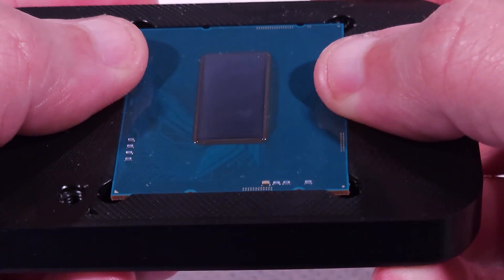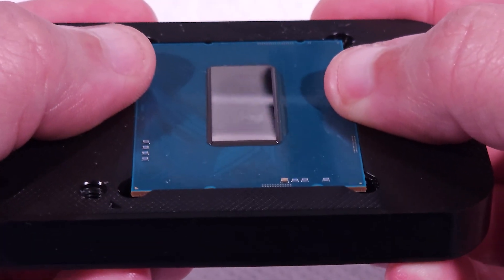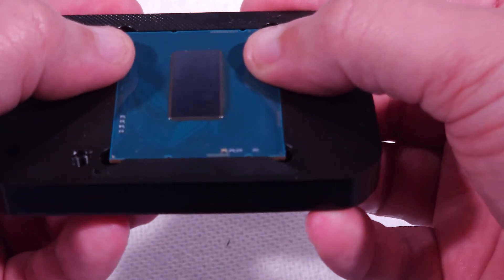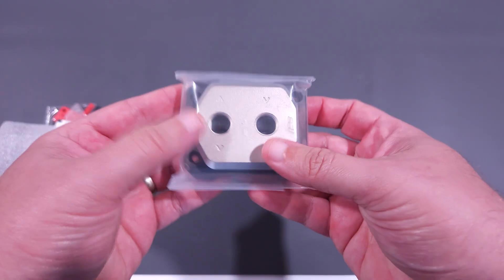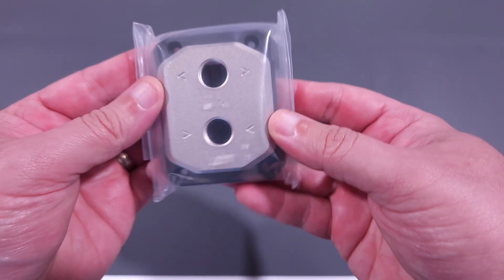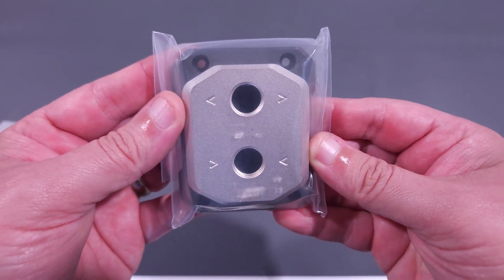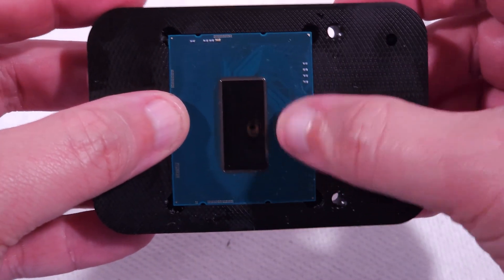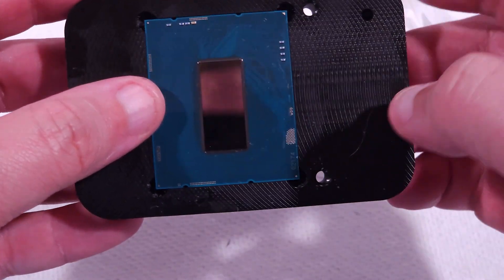That completes the process for delidding an Intel 14th generation CPU. From here, you can decide what kind of cooling solution to apply to maximize your system's cooling performance. I'd recommend at least checking out the Iceman Direct Die Water Block as I've had great performance from that product. I hope you've enjoyed this demonstration. Thanks for watching and peace out.